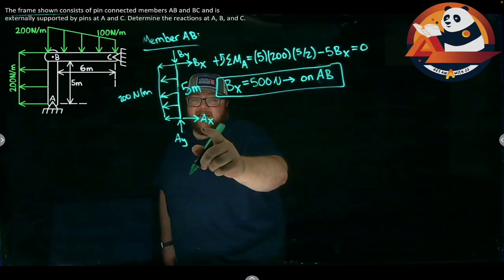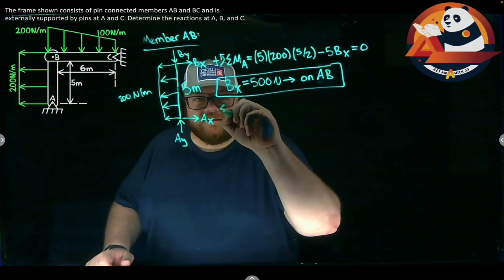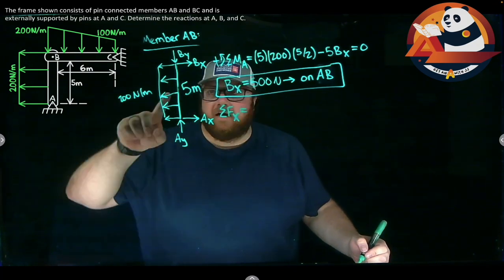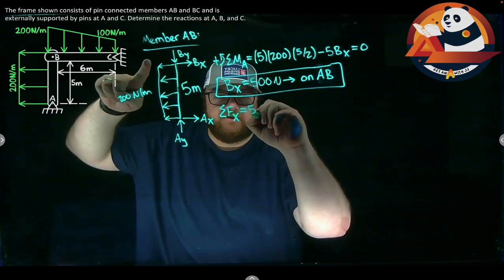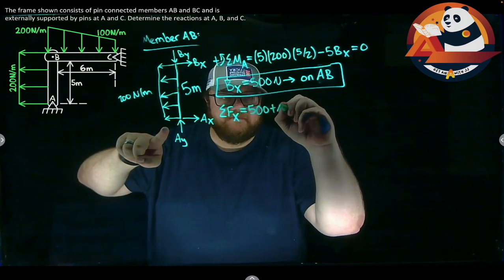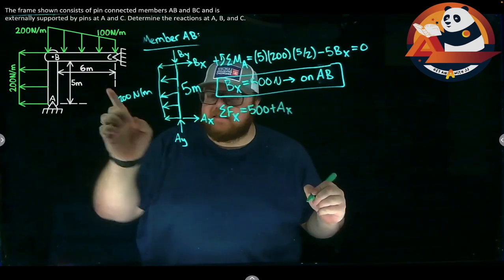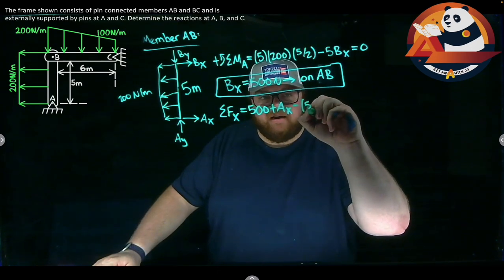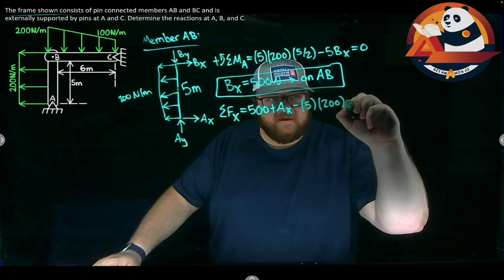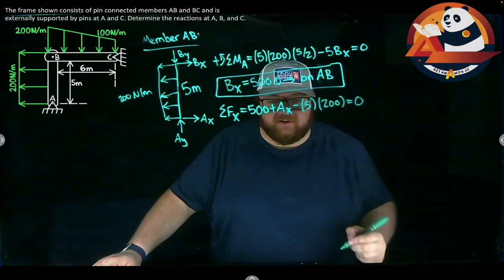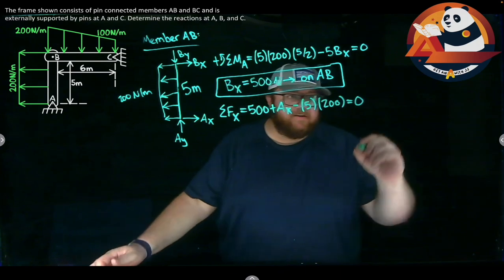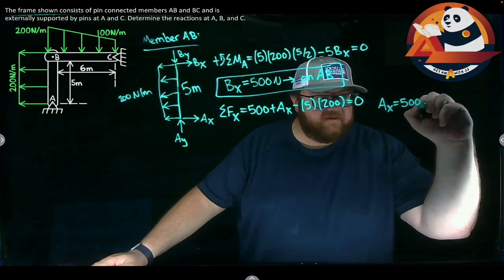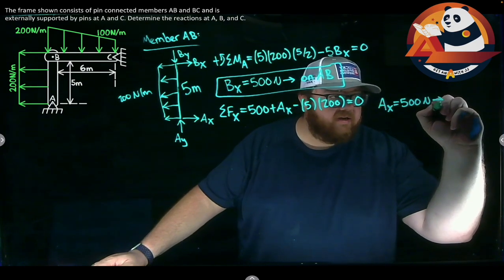If I know BX, I can sum force in the X and get AX. So let's look at that one next. Summing forces in the X direction. I have BX 500 plus AX minus, because it points to the left, the area of my distributed load. Minus 5 times 200 is going to get me to zero. I can solve that for AX. And I'll get a positive here as well. AX is 500 Newtons.